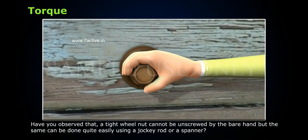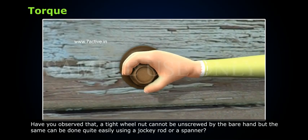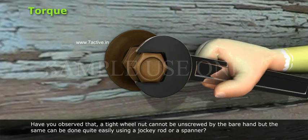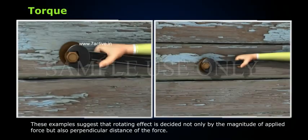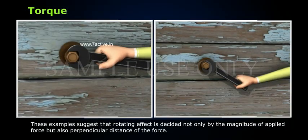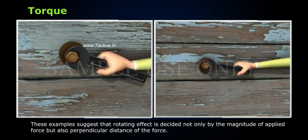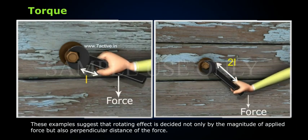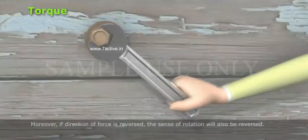Look at this example. Have you observed that a tight wheel nut cannot be unscrewed by the bare hand, but the same can be done quite easily using a jockey rod or a spanner? These examples suggest that the rotating effect is decided not only by the magnitude of the applied force, but also the perpendicular distance of the force. When the lever arm length is doubled, it is seen that the effort of force required to turn the nut is halved.